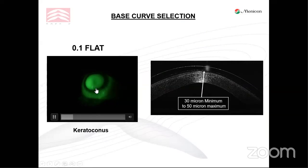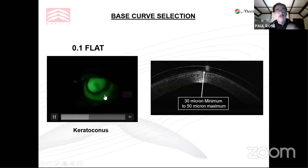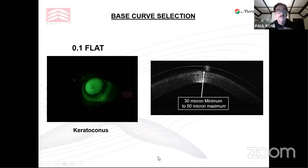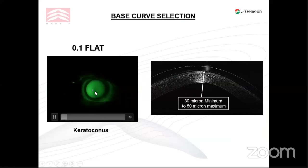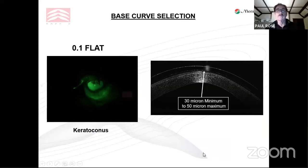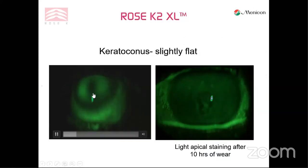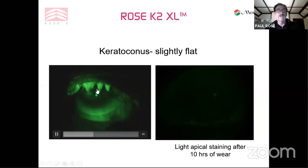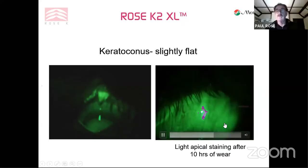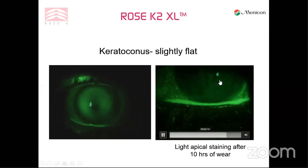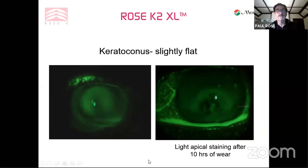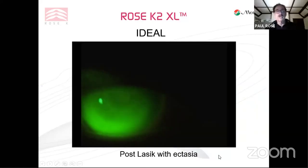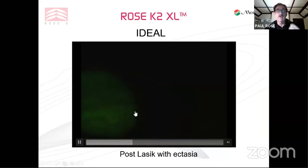Here is a keratoconic fit — I used to say that was okay, but I now say that's a little flat. When the patient blinks and the cone disappears, it's acceptable. But if the patient blinks and you still see touch, it is flat. I want to see around 50 microns — absolute minimum of 30 microns of clearance. Here's a keratoconic I thought I'd fitted well when I first started using my design; I left it a little flat and after 10 hours of wear, you can see staining at the apex of the cone — unacceptable. Here is a post-LASIK ectasia that is acceptable: as the patient blinks, we just see touch and then it goes. I'd be very happy with that fit.